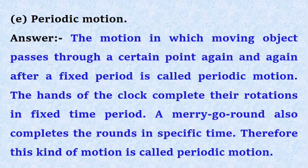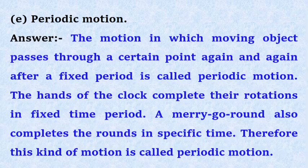E. Periodic motion. Answer: The motion in which moving object passes through a certain point again and again after a fixed period is called periodic motion.